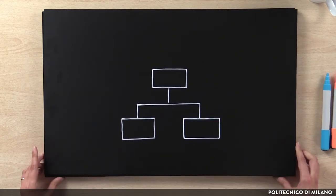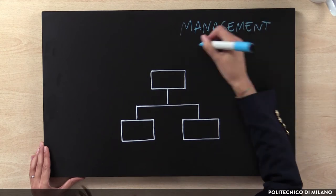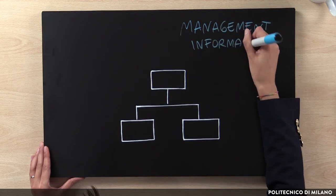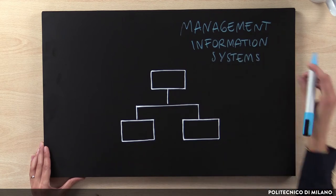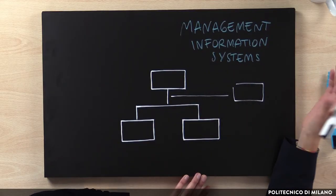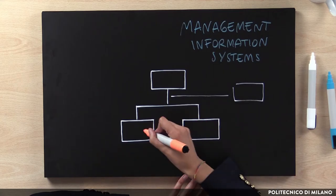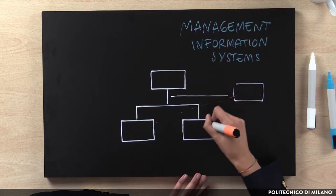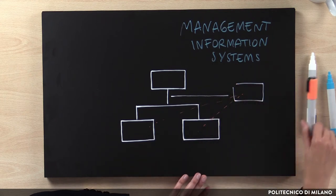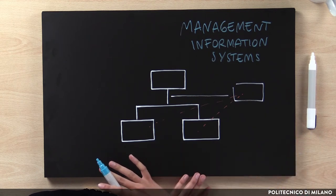The other and last coordination mechanism, which is not strictly related to the organizational configuration, is represented by the management information systems. Management information systems are the technologies dedicated to the exchange of information and to the communication within the company. This mechanism is fundamental to support coordination and integration among organizational units. We can have vertical information systems and horizontal information systems.